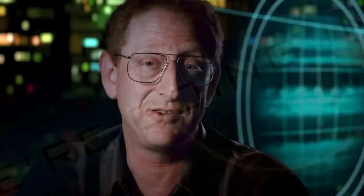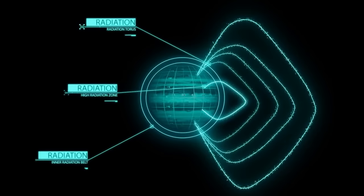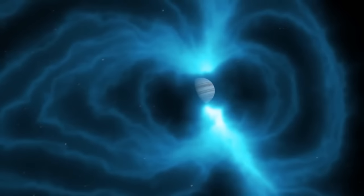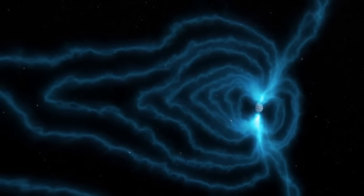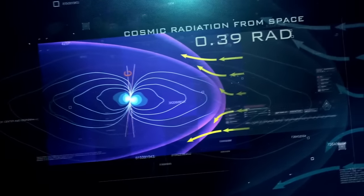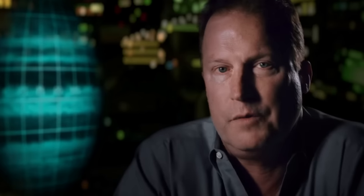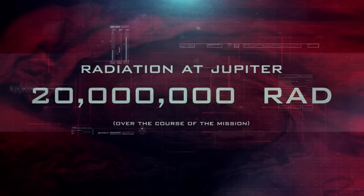It's the biggest and baddest planet in the solar system with the biggest and baddest radiation and magnetic field. The background radiation we're exposed to on Earth is about a third of a rad. What we expect to see at Jupiter is about 20 million rad.